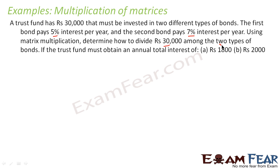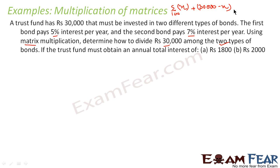I'll do one and you can do the other. The question says you must use matrices because this is the matrix chapter. Without matrices, you could say: divide the amount so that one part is x and the other is 30,000 minus x. One bucket gives 5% and the other gives 7%, and the total is 1,800 rupees. That gives one equation to find x, but now we have to use matrices.